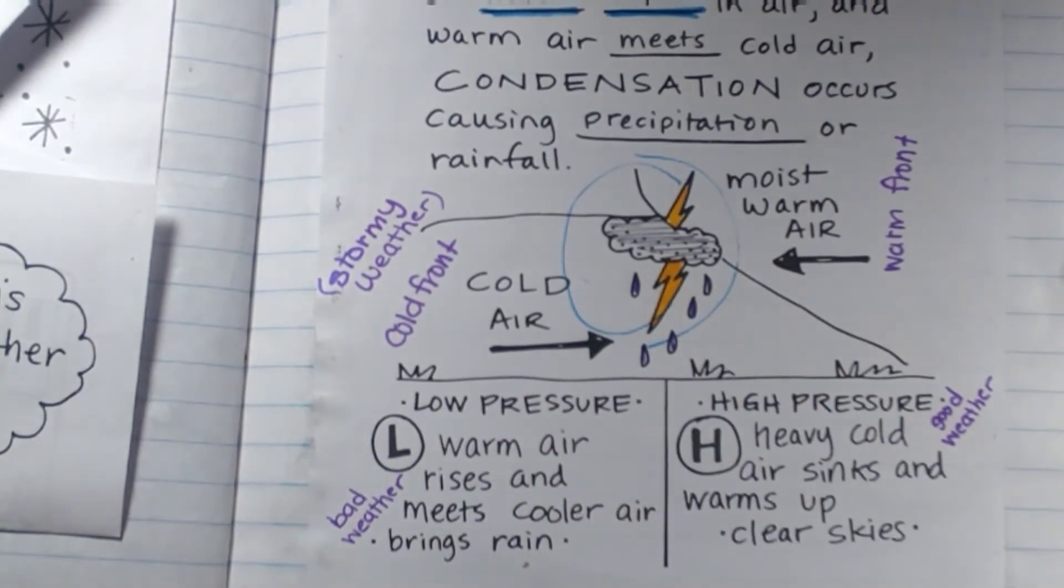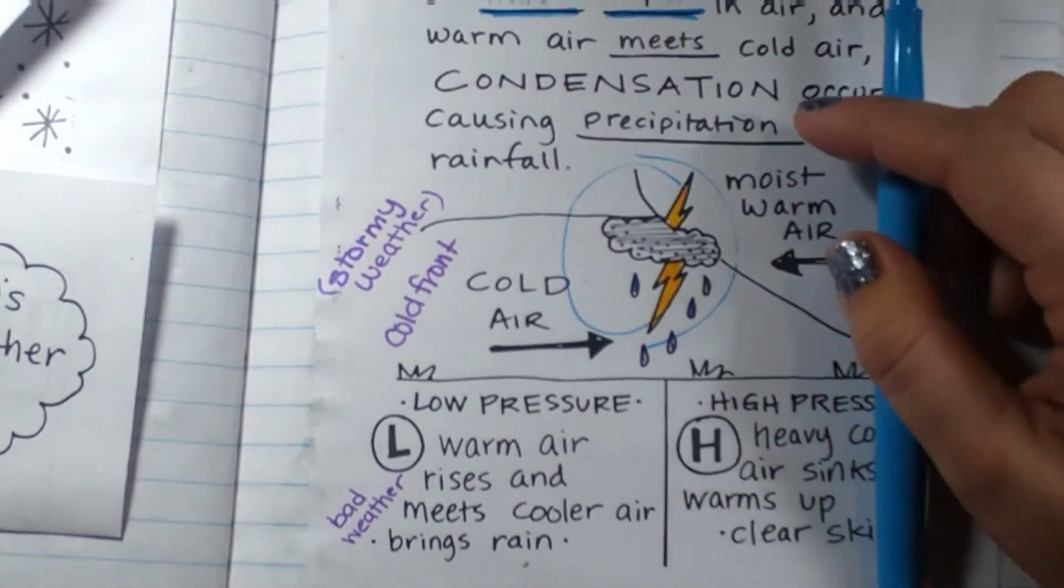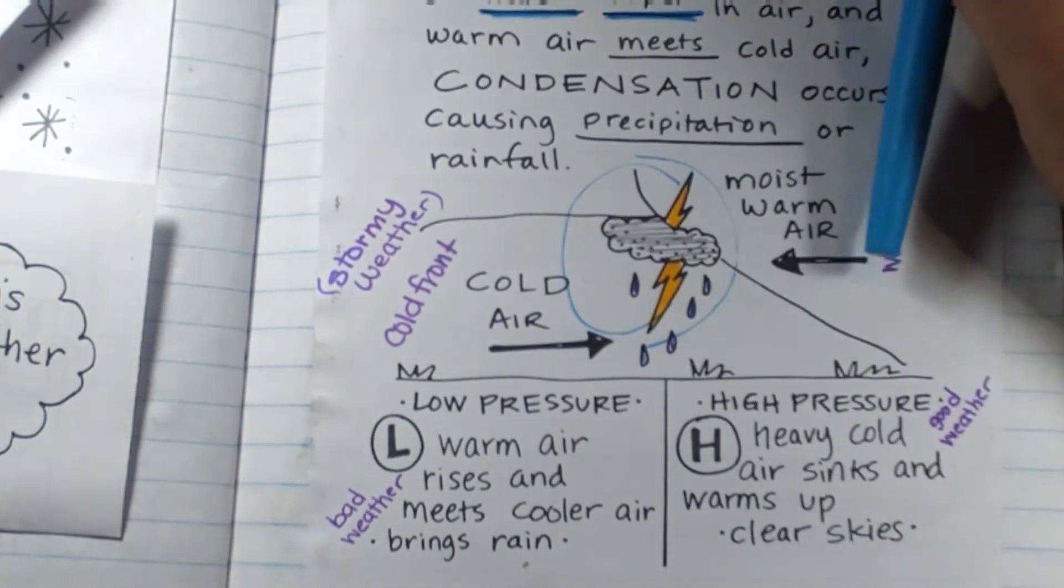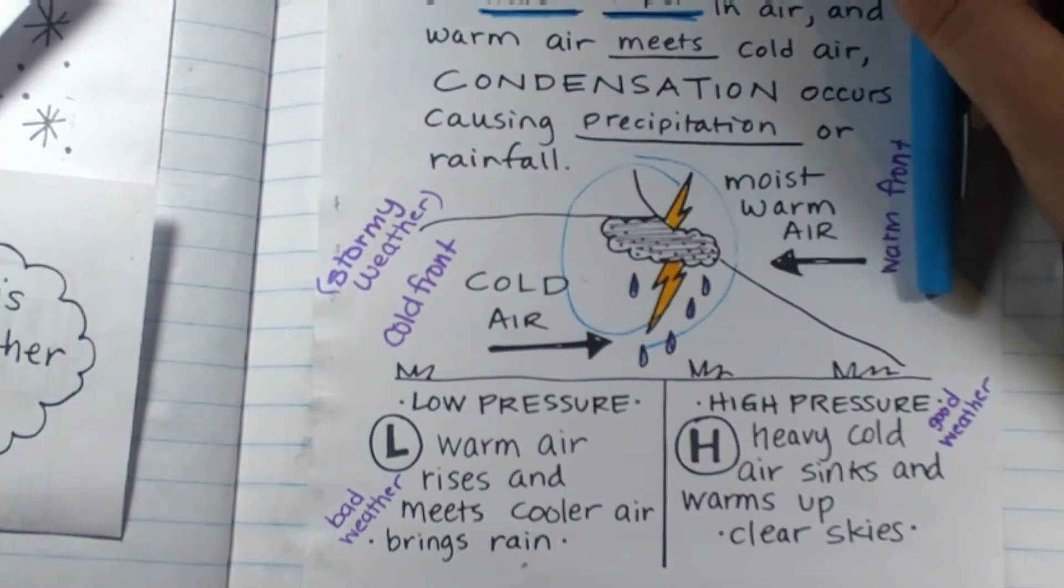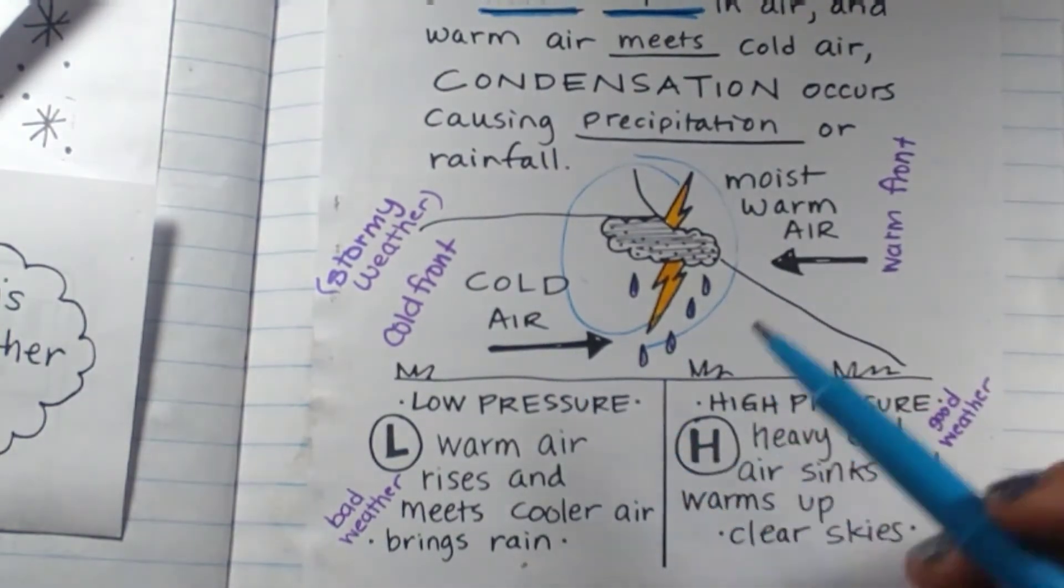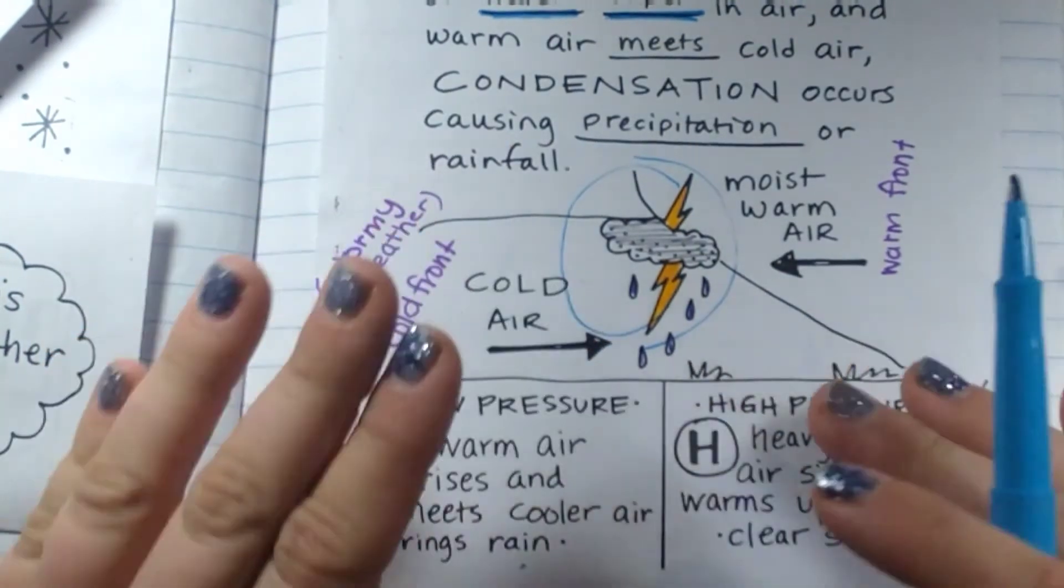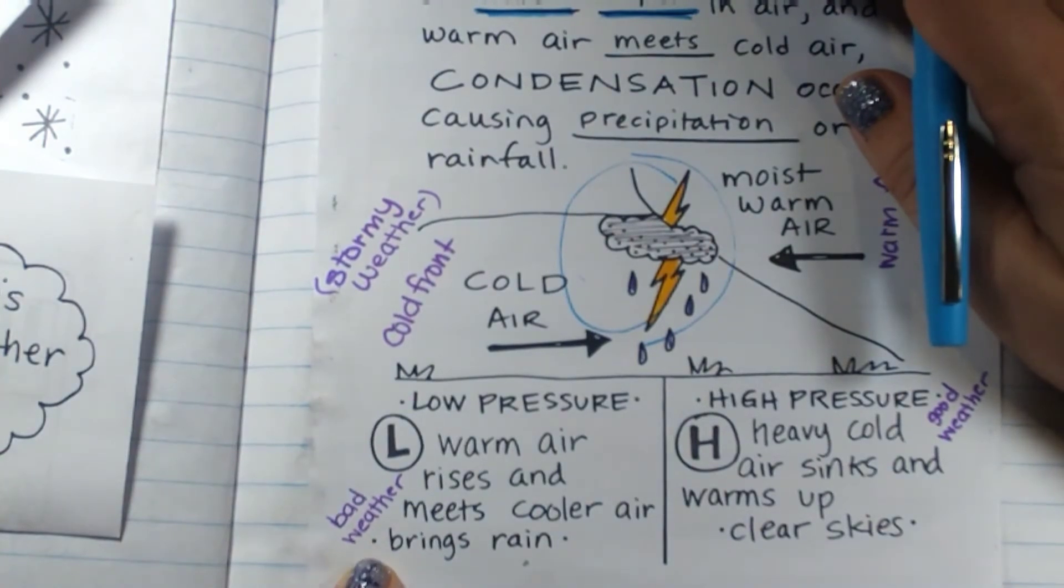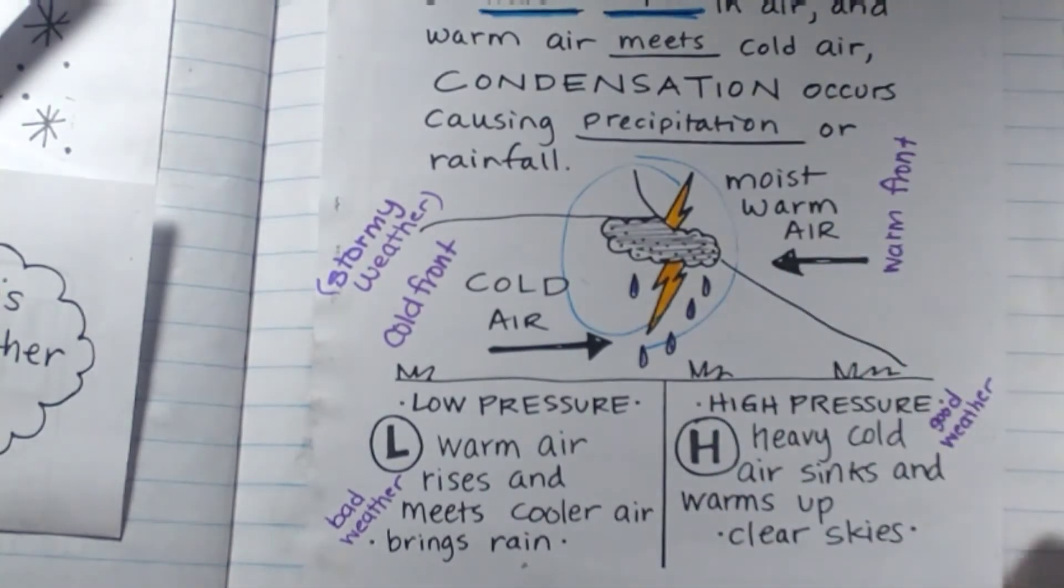A low pressure system is when warm air is rising. Basically, warm air is going to rise, and because there is not enough pressure pushing down on the warm air, it rises. That means bad weather because the warm air is meeting the cooler air.